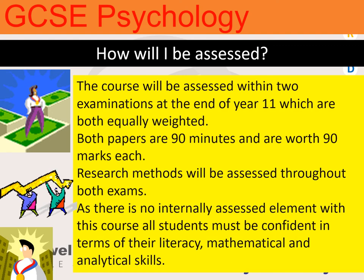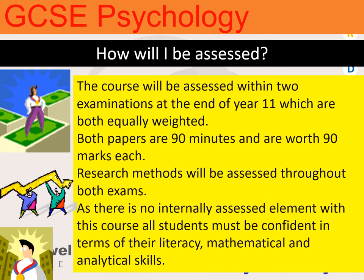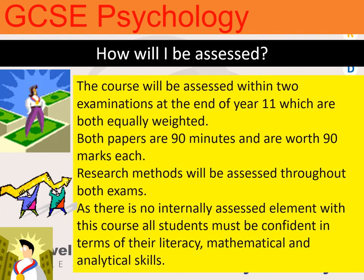You're assessed in psychology at the end of Year 11 with two exam papers, both 90 minutes long and both worth 90 marks. Research methods is assessed throughout both exams, and there is no internally assessed element — no coursework at all. You have to be confident in exams and have a good level of literacy and mathematical ability, as there is some maths involved in the research methods section.